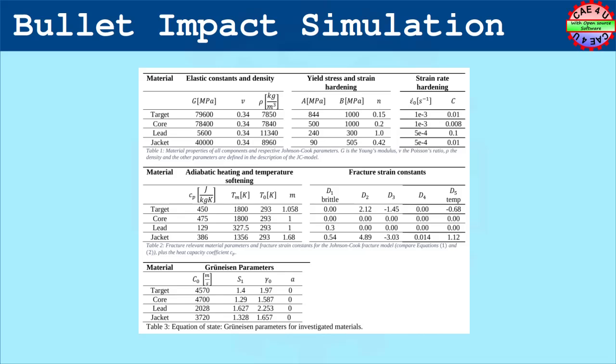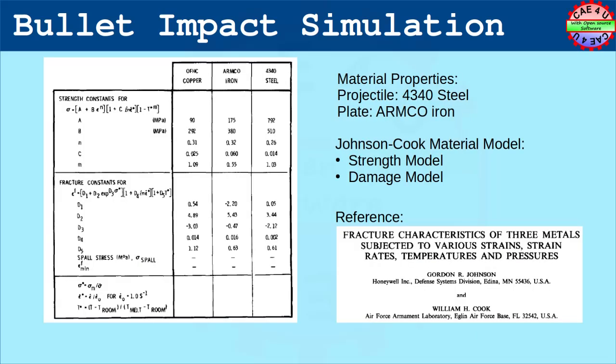Surprisingly, the material parameters provided in the reference publication did not work well. So we use the material properties published by Johnson and Cook. This is again a big deviation which contributes to the deviation while comparing the results. We will see that as we progress.